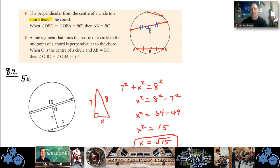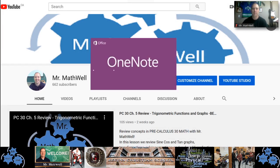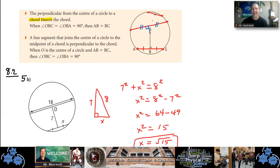The converse also holds: a line segment that joins the center of a circle to the midpoint of a chord is perpendicular. So if you know a point is the midpoint of a chord, the line connecting it to the center must be 90 degrees. It's really three different ways to look at the same thing.